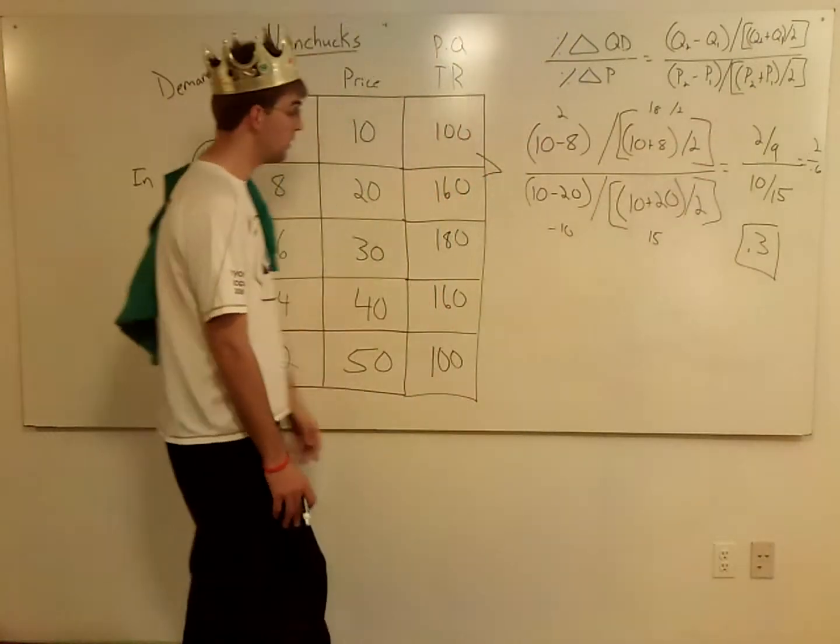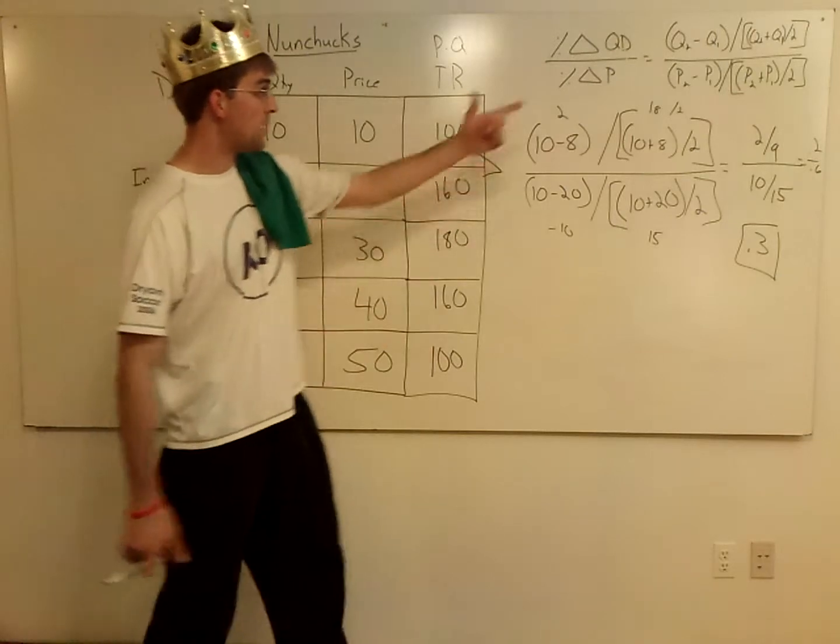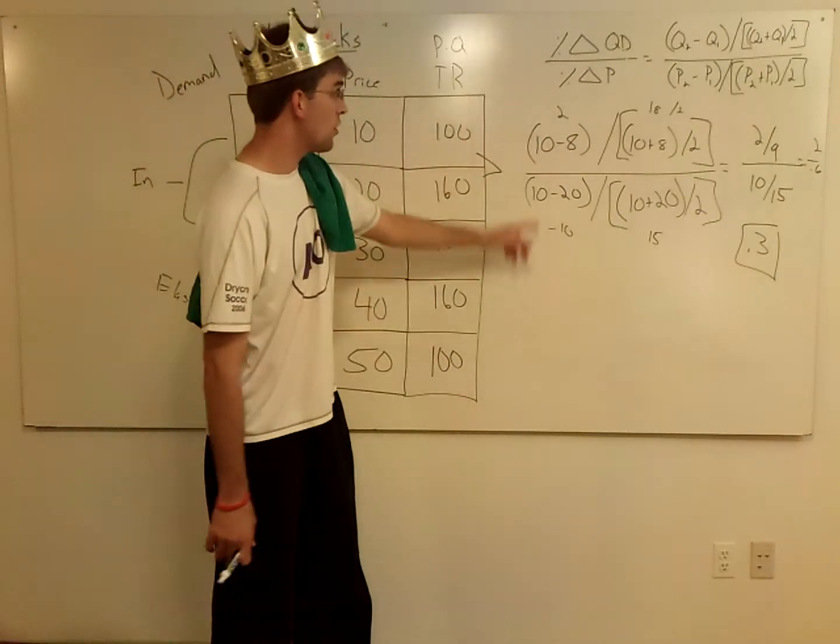On the bottom I had P2 minus P1. So if my Q2 is 10, my P2 should be 10 as well, minus 20, over 10 plus 20, over 2. 30 over 2 gives me 15.